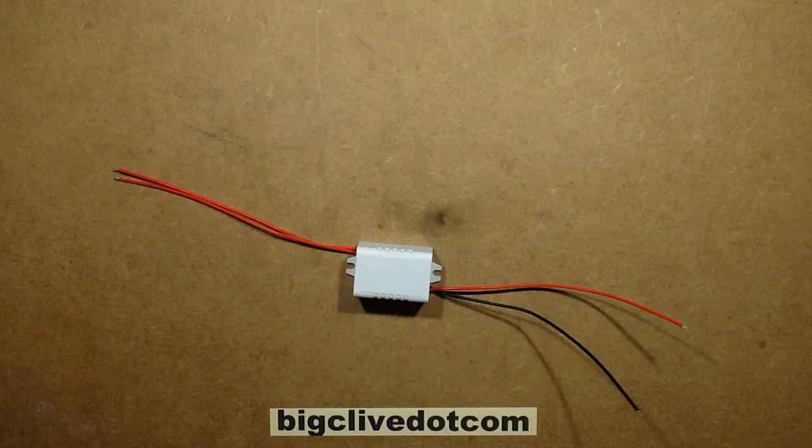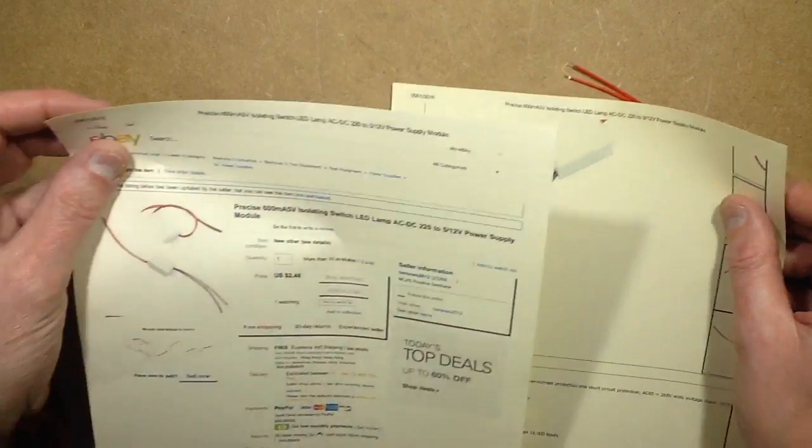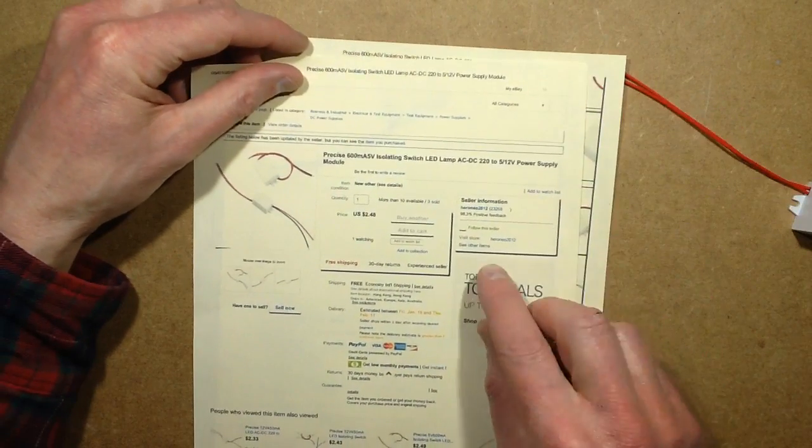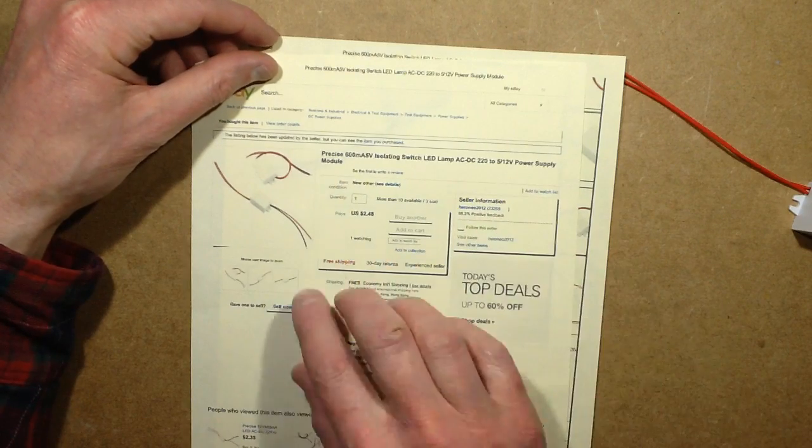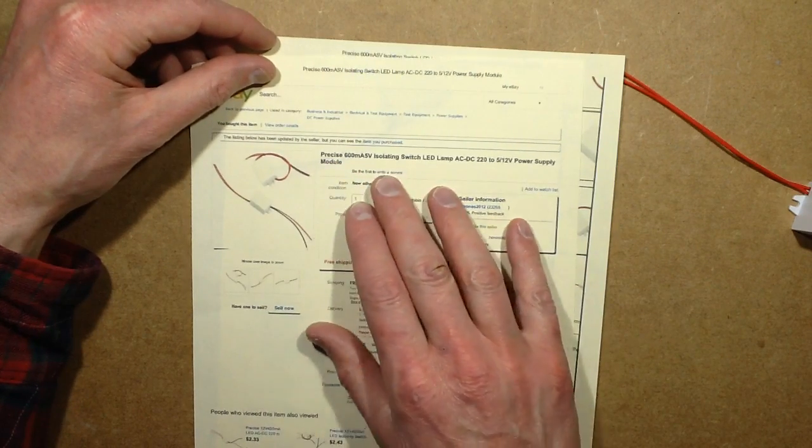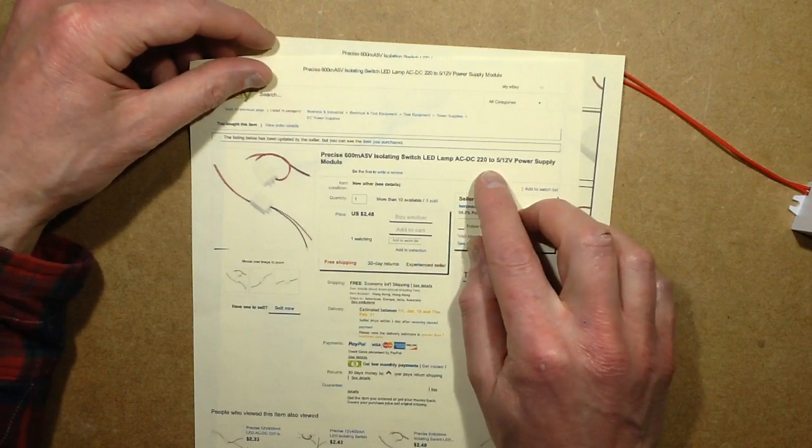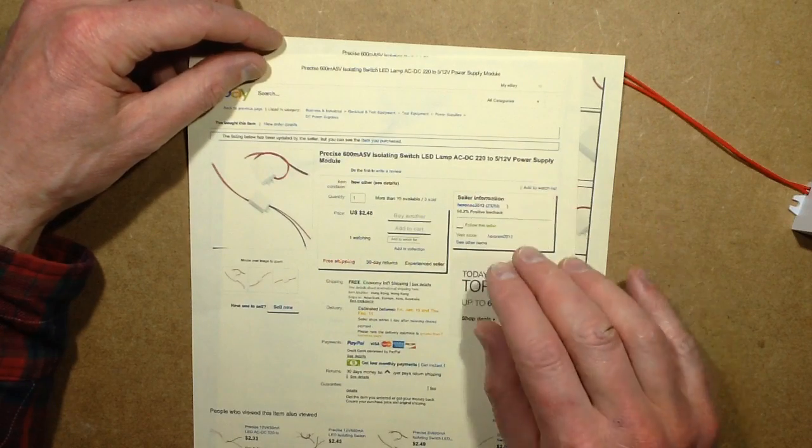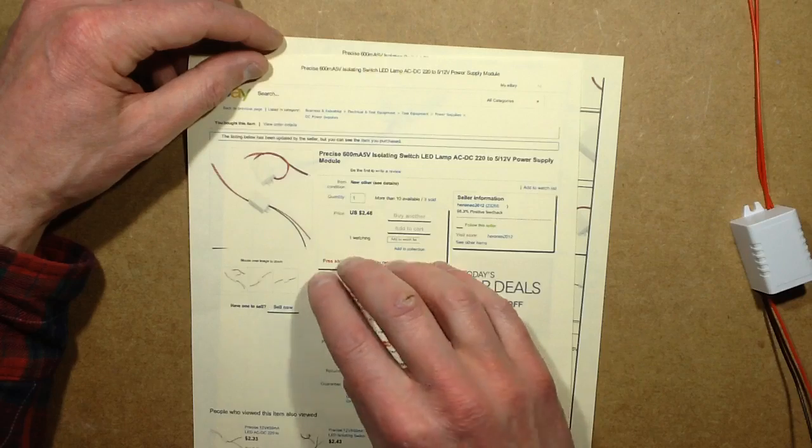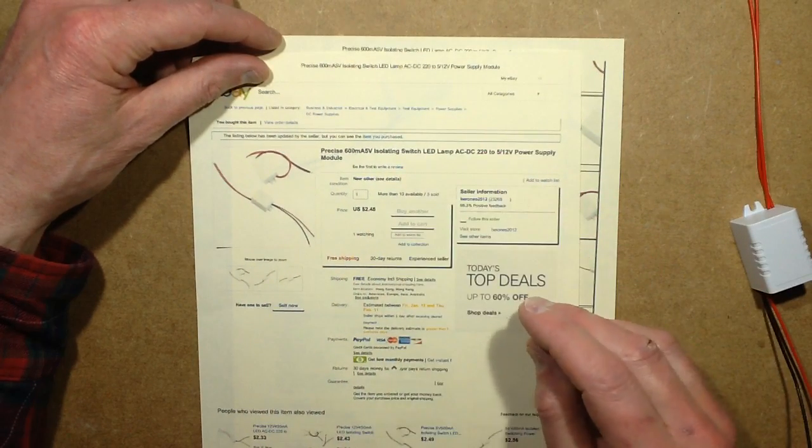I'll just put that one out of the way. Should I say the eBay listing. It came from a supplier called Heronio 2012 and it says precise 600 milliamp 5 volt isolating switch LED lamp AC DC 220 to 5 to 12 volt power supply module. Now the 5 to 12 bits a bit odd. I wondered if this put out two voltages or was there supposed to be an option for the 12 volt or 5 volt one?